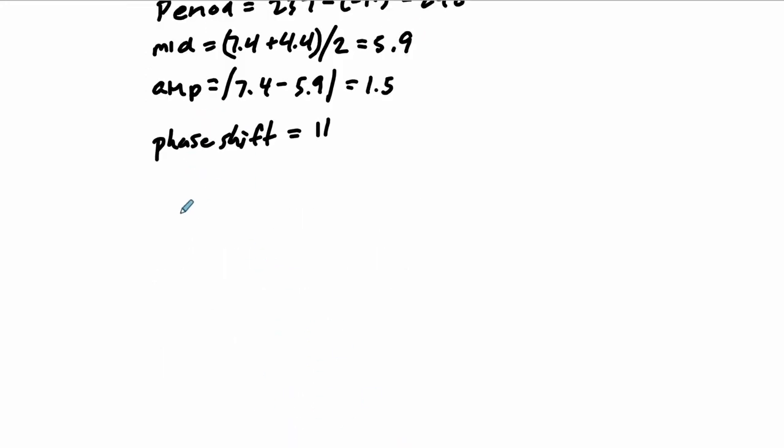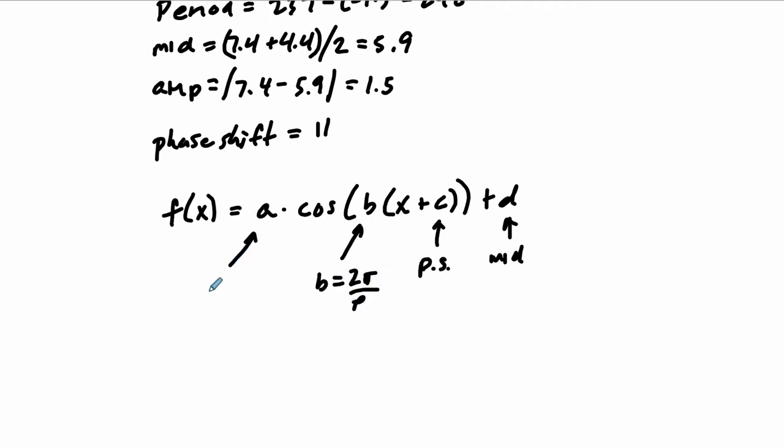Now in general, the general structure of these functions, you've got A times sine or cosine, right? Cosine of B times X plus C plus D. Well, D is the midline. C is the phase shift. And B is connected to the period. B equals 2 pi over the period. And the absolute value of this number is the amplitude.